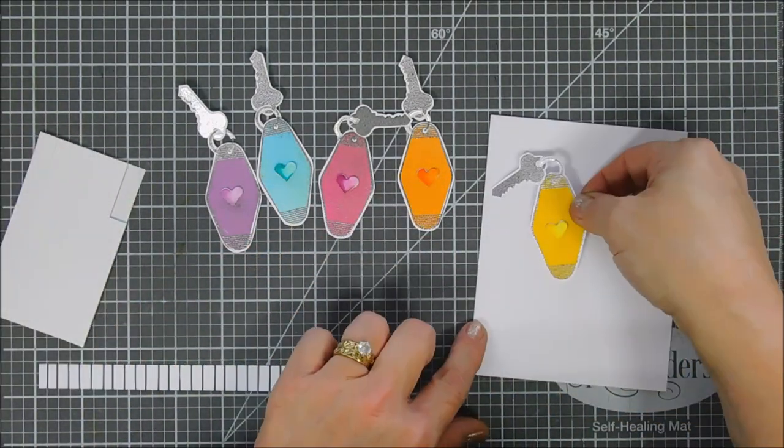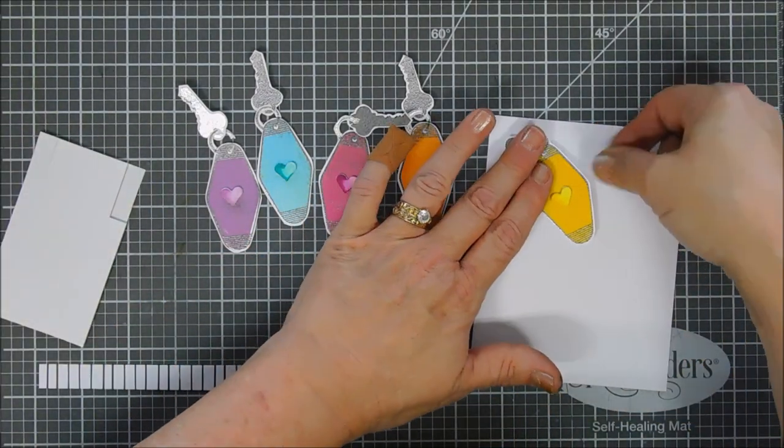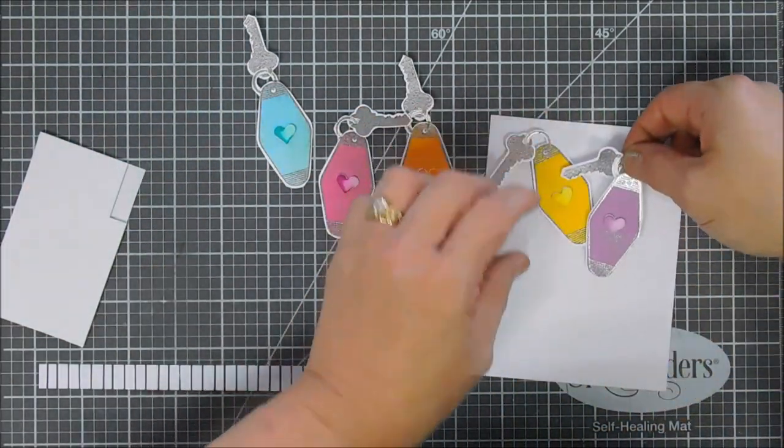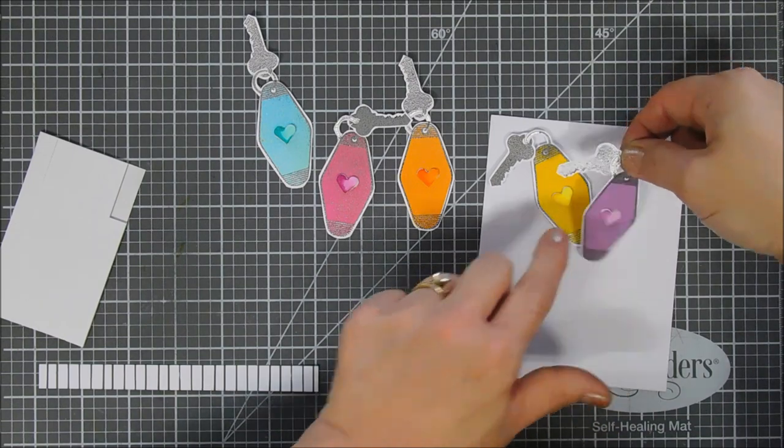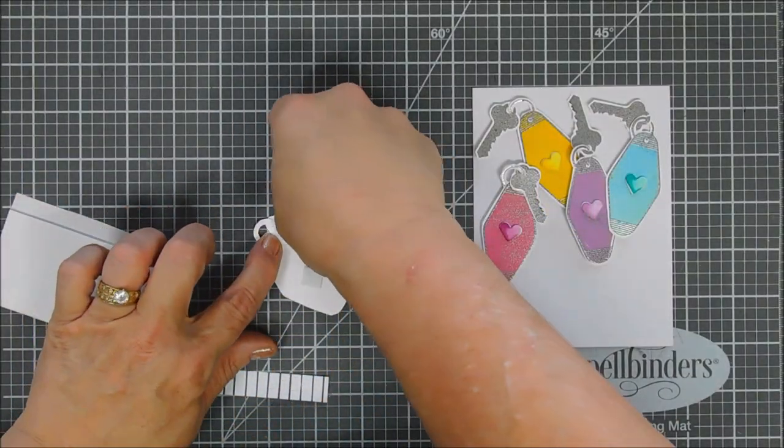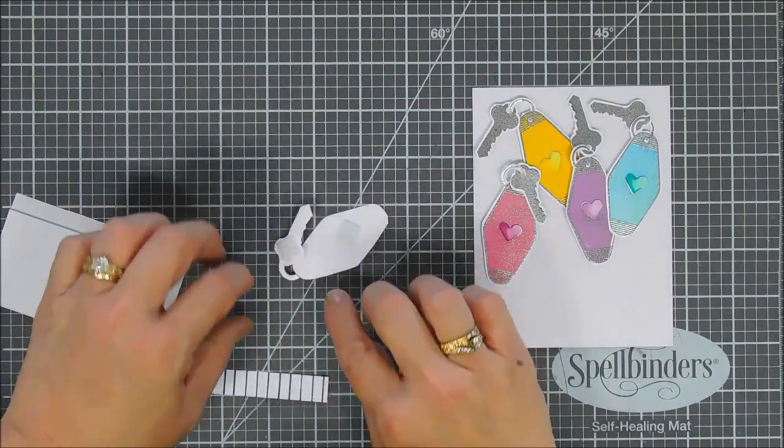This one's going to go in the corner here and we're just going to kind of overlap and place them really wonky all over the card front. I am going to leave a little bit of an open area on that bottom right corner because that's where we're going to stamp our sentiment. This is our last key but before we add it we're going to go ahead and add our striped paper.